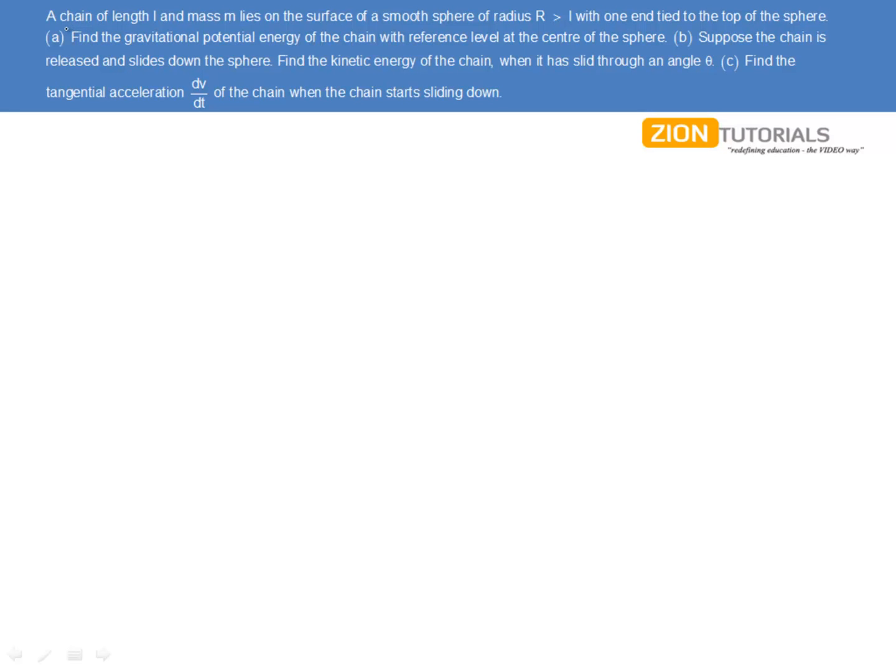As the question says, a chain of length L and mass M lies on the surface of a smooth sphere of radius R, with one end tied to the top of the sphere. Then, find the gravitational potential energy of the chain with reference level at the center of the sphere. Part b: Suppose the chain is released and slides down the sphere, find the kinetic energy of the chain. And c: Find the tangential acceleration dv by dt of the chain when the chain starts sliding down.